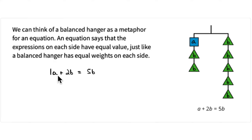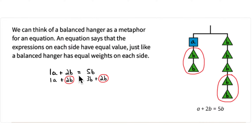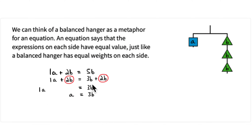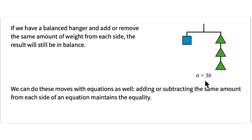I can split the five B into a group of three B's and a group of two B's. Now I can visualize taking away the same amount from each side and the hanger remains balanced. If I have two B and subtract the two B away, and I have two B on this side and subtract that two B away, I'm left with one A equals three B.